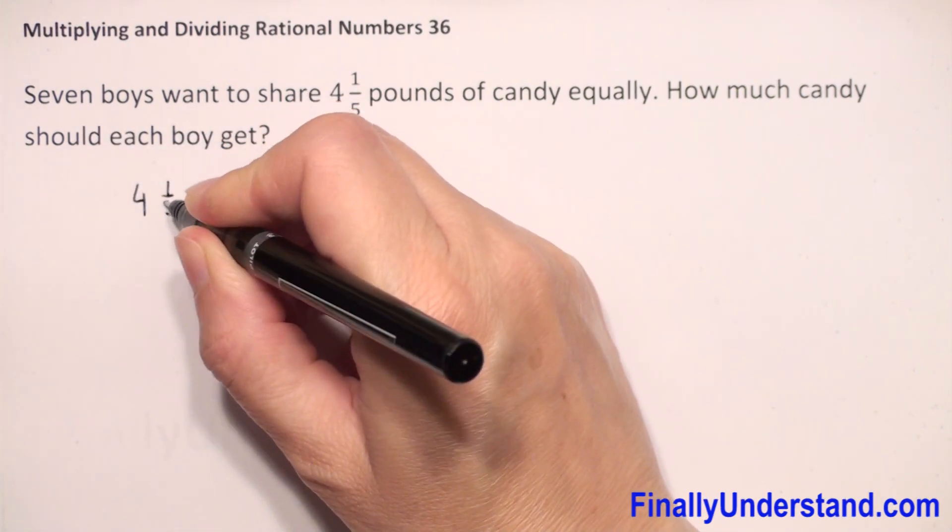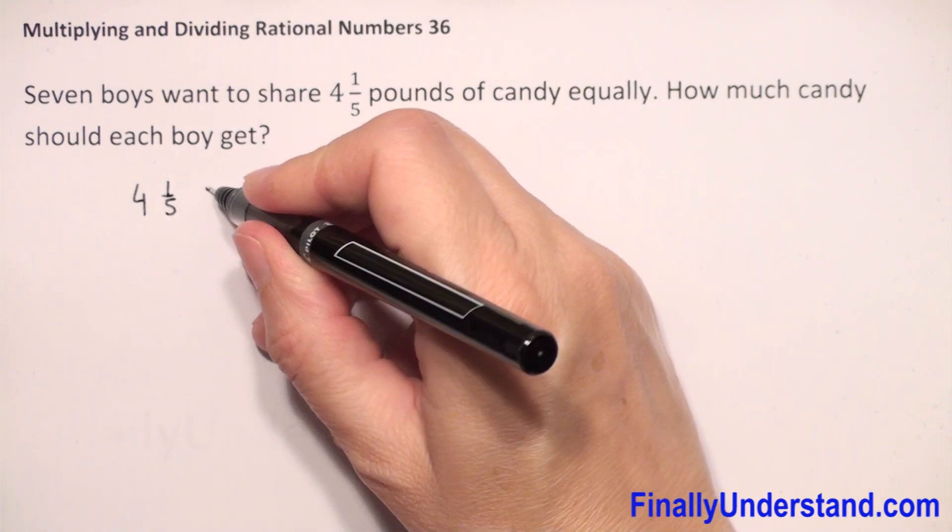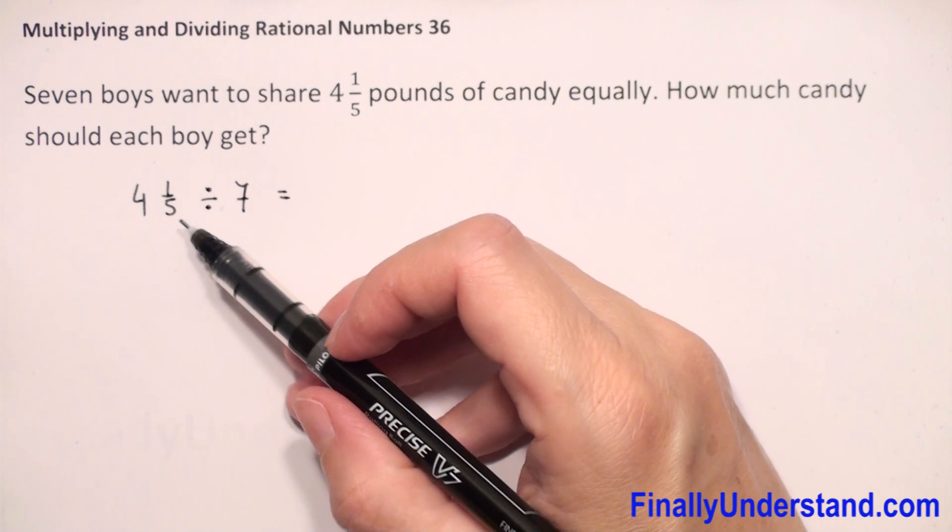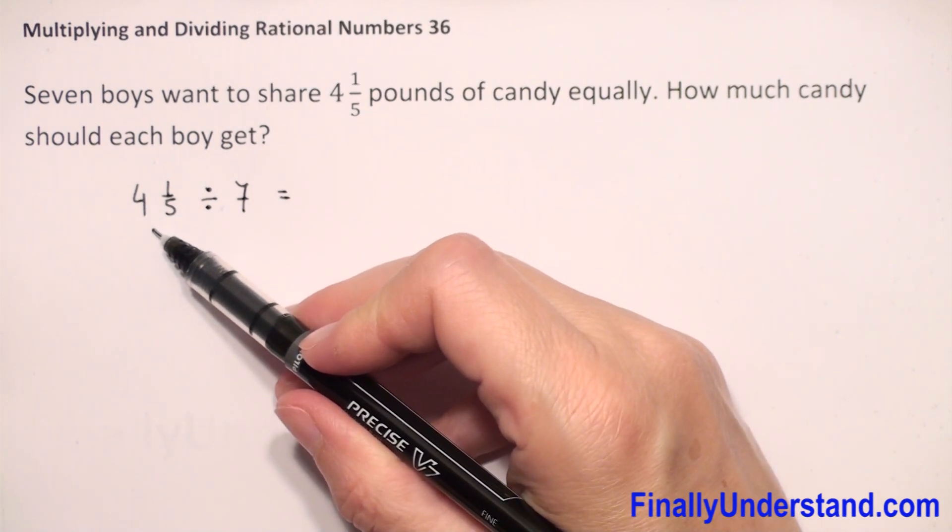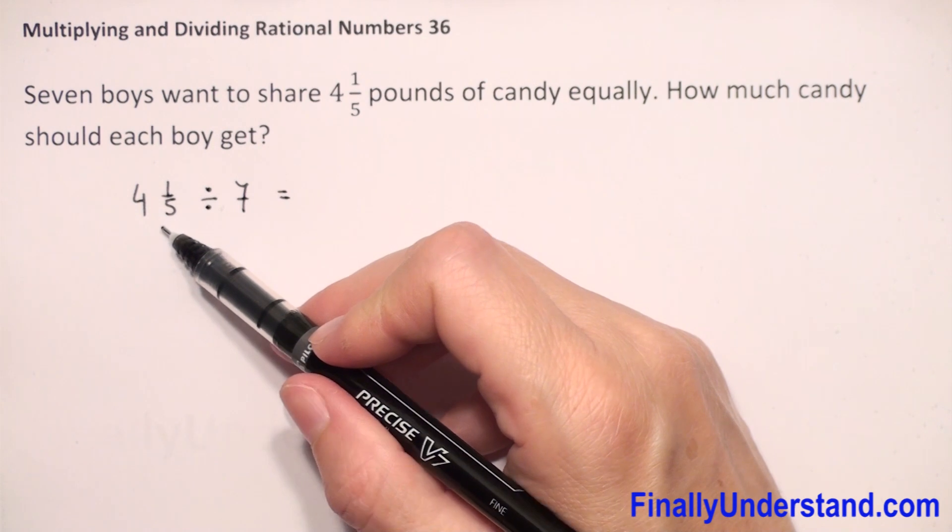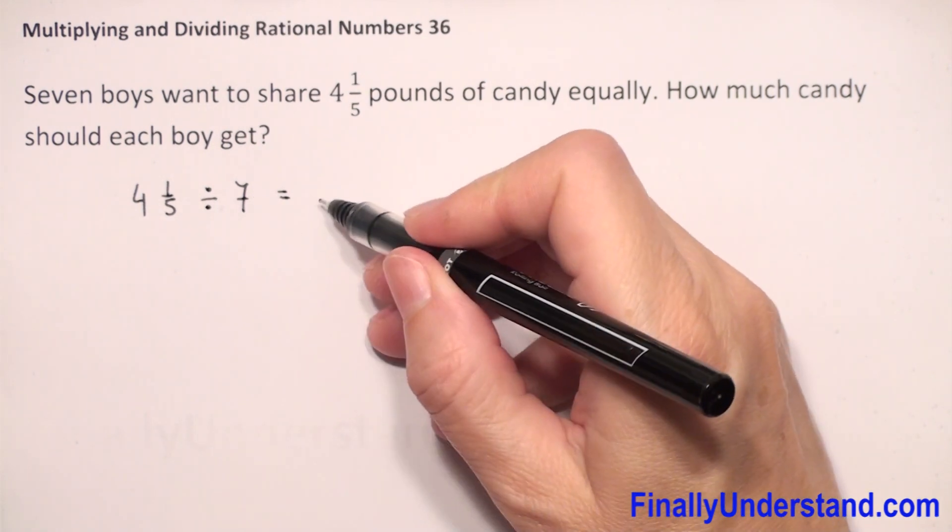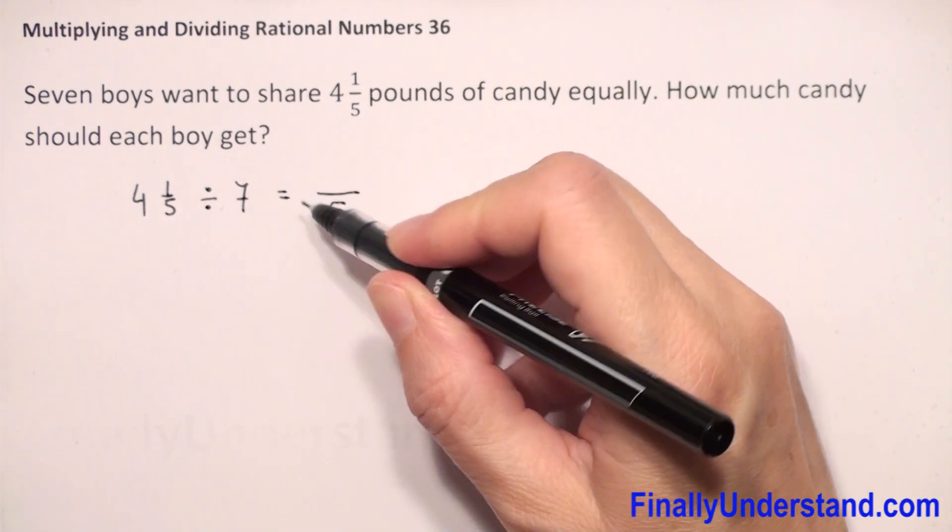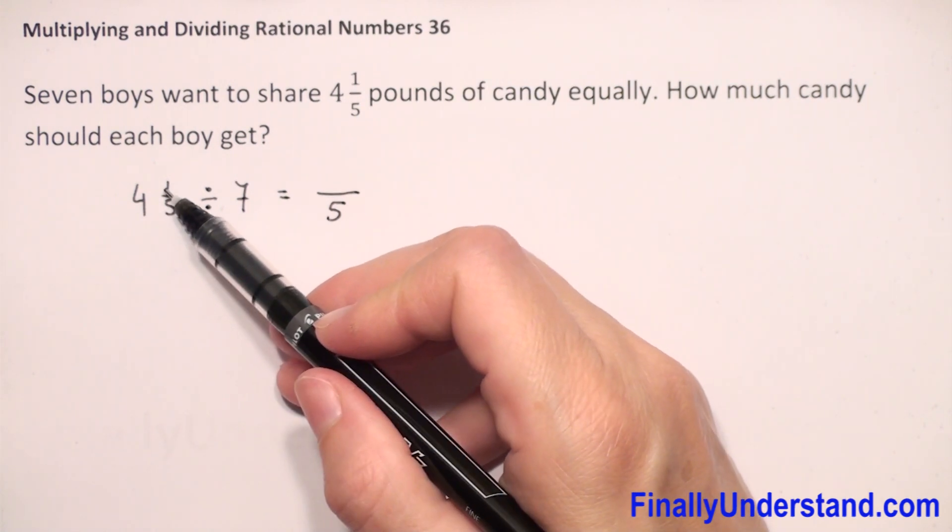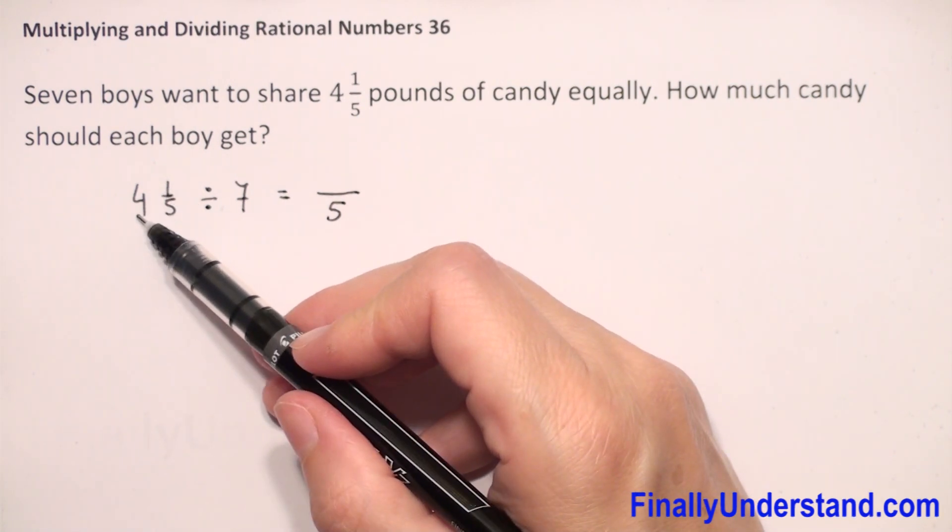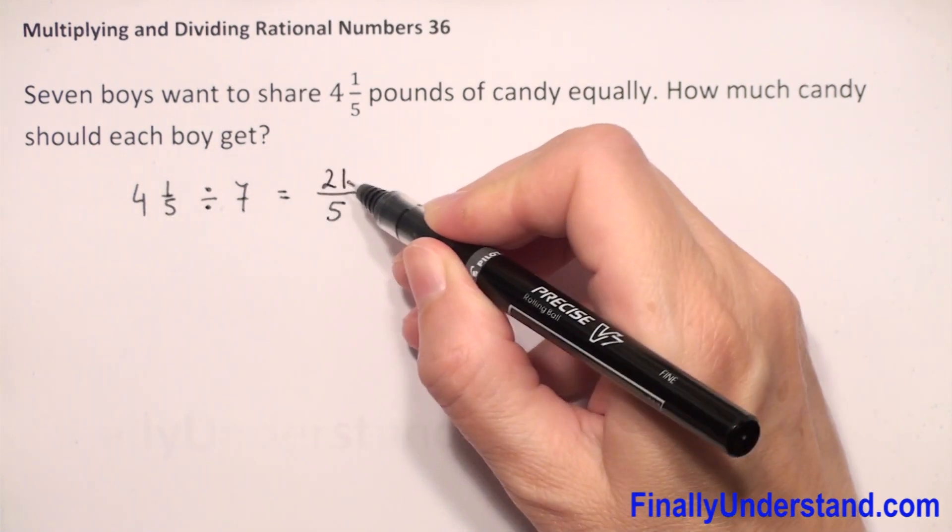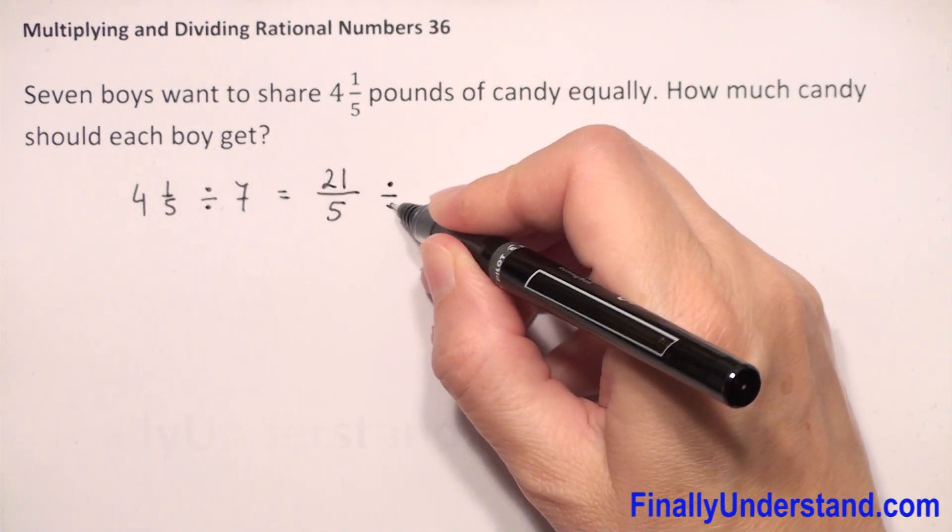...divided by 7. We have a mixed number, so we will change this mixed number to an improper fraction. How do we do this? We multiply the denominator times the whole number plus the numerator. So 5 times 4 is 20, plus 1 is 21, giving us 21 over 5.